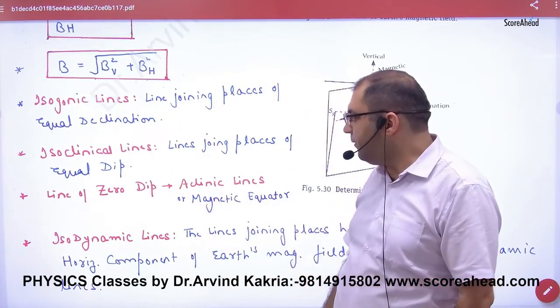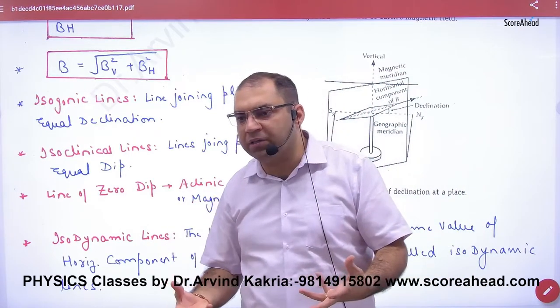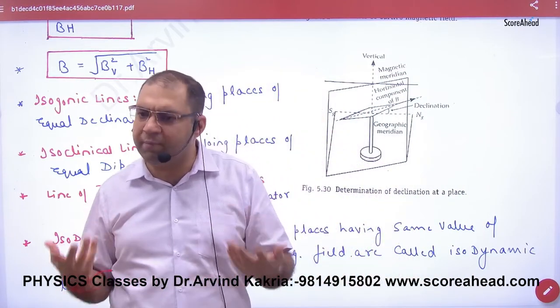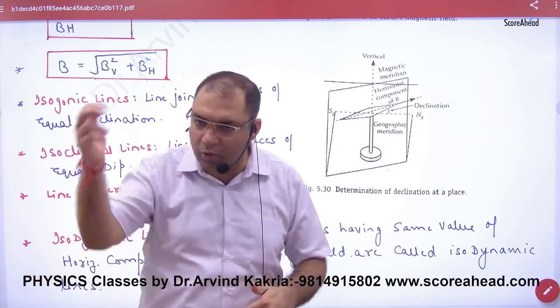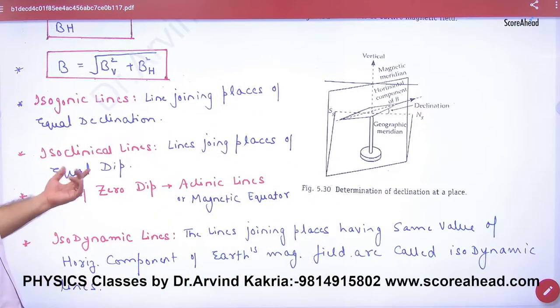Isoclinical lines: line joining places of equal dip. There are many locations where the angle of dip will be the same. The lines joining each such location are isoclinical lines.